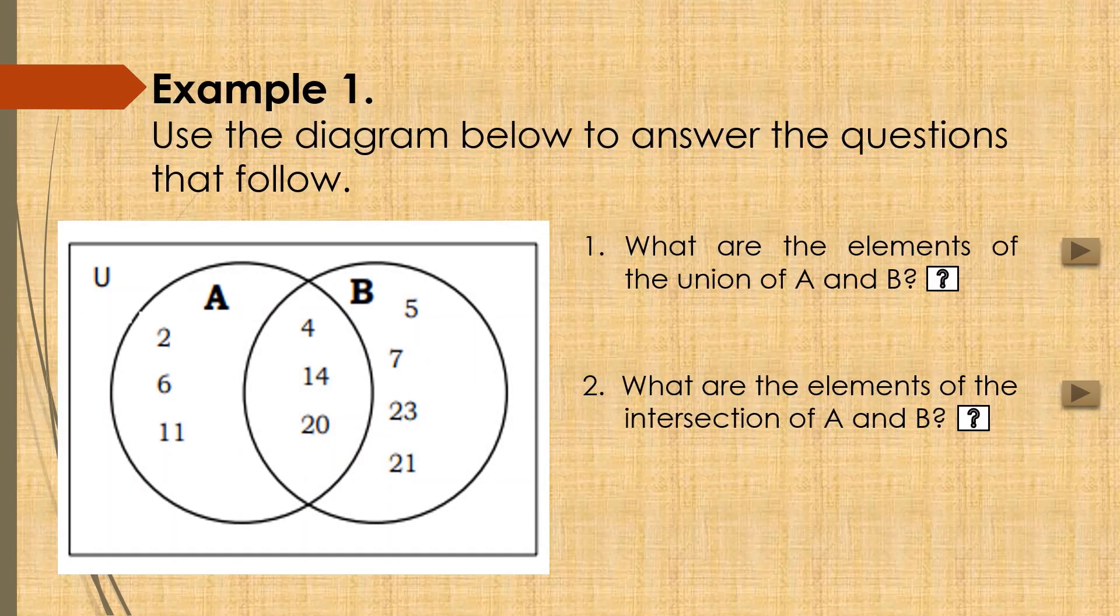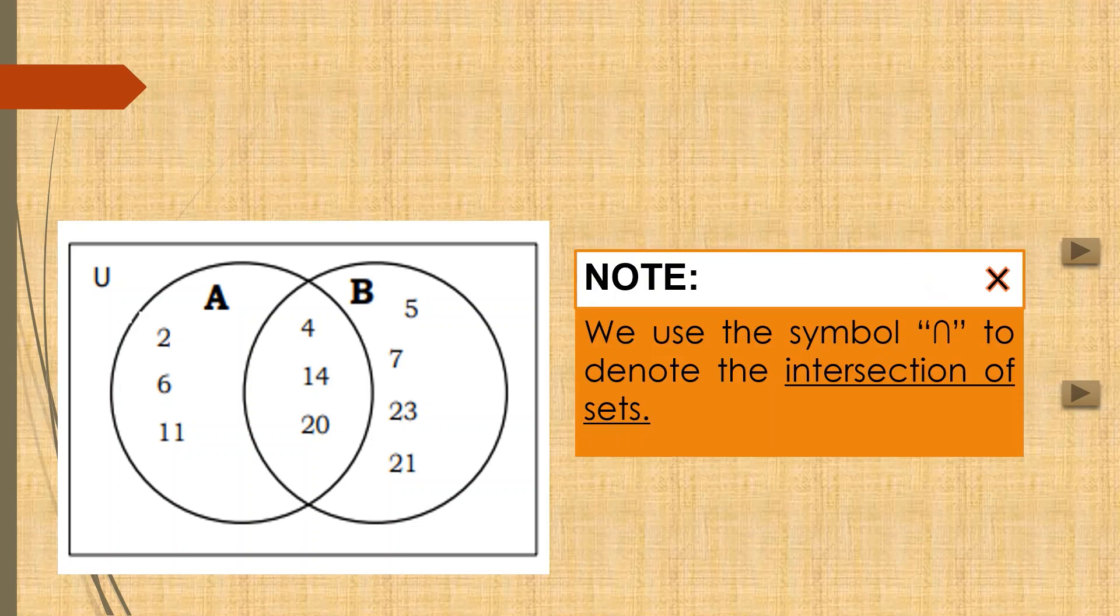Next, question number 2. What are the elements of the intersection of A and B? So, kung kanina, pinagsama natin ang elements ng A at B dahil ang tanong sa number 1 ay ang union. So, number 2 naman, since the question is what is the intersection of A and B, therefore, ano lang yung elements na nag-intersect sa A at B? Let us have this reminder. We use the symbol inverted U o papaligtan na U to denote the intersection of sets.